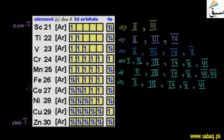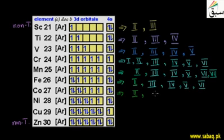Now we move to cobalt. For cobalt, two electrons lose first giving oxidation state +2, then +3, then +4, and then +5. So cobalt shows oxidation states +2, +3, +4, and +5.